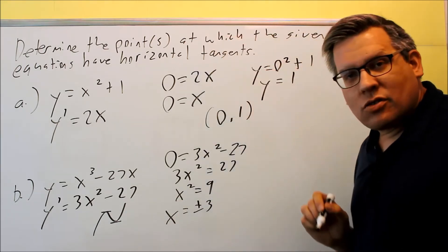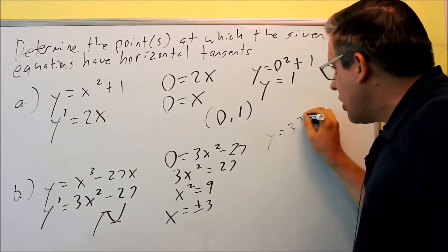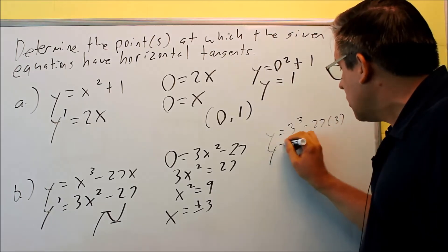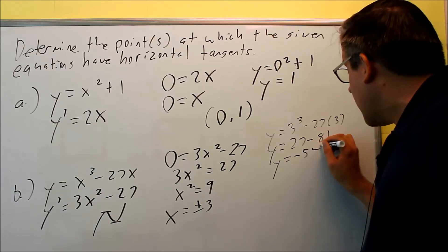We're not done yet, we've got to find the points, so we've got to plug these into each. So we're going to do y equals 3 cubed minus 27 times 3, so we get 27 minus 81, you're going to get negative 54.